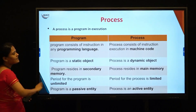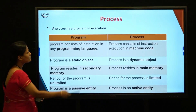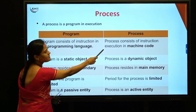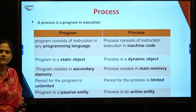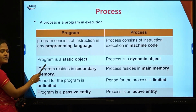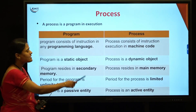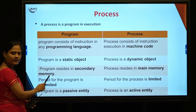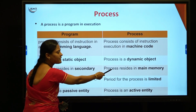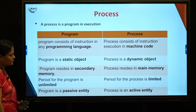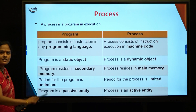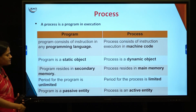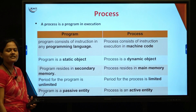Now we will see the basic differences between a program and a process. All the instructions in the program will be present in the programming language, whereas the process contains the code in the form of machine code which can be understood by the system. A program is called a static object whereas a process is a dynamic object. This program resides in your secondary memory; when it is loaded into main memory it becomes a process because it is given to the CPU for execution. The lifespan of a program is unlimited whereas the lifespan of a process is limited. Finally, a program is a passive entity whereas a process is an active entity.